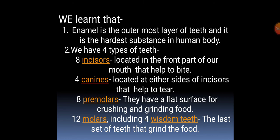So here we learn that enamel is the outermost layer of the teeth and it is the hardest substance in the human body. We have four types of teeth: eight incisors located in the front part of the mouth that help us to bite; four canines located at either side of incisors that help to tear; eight premolars with a flat surface for crushing and grinding food; and twelve molars, including four wisdom teeth, at the last set of teeth that grind the food.